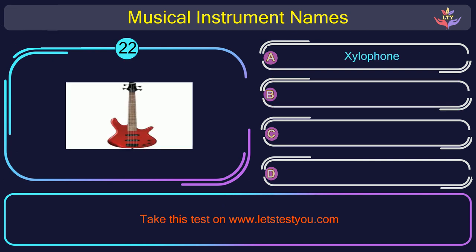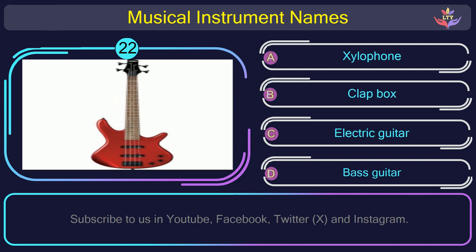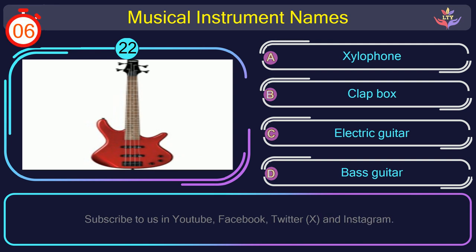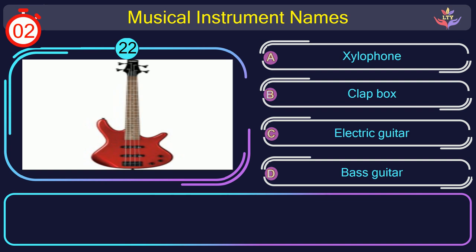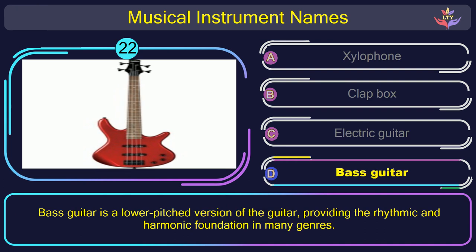Question number 22. Could you figure out the name of the musical instrument in this picture? The correct answer is option D: Bass guitar. Bass guitar is a lower-pitched version of the guitar, providing the rhythmic and harmonic foundation in many genres.